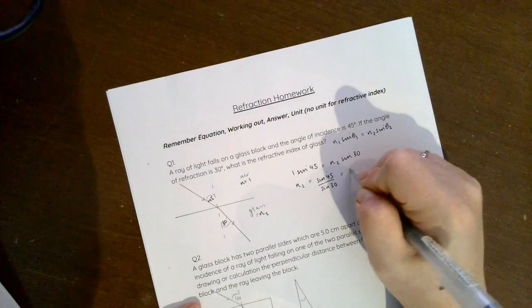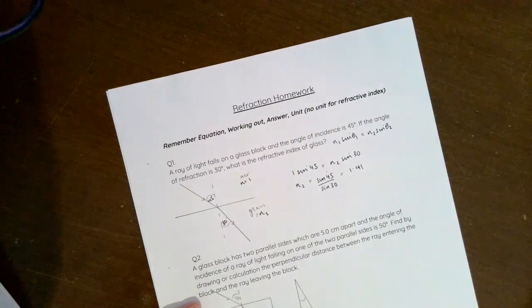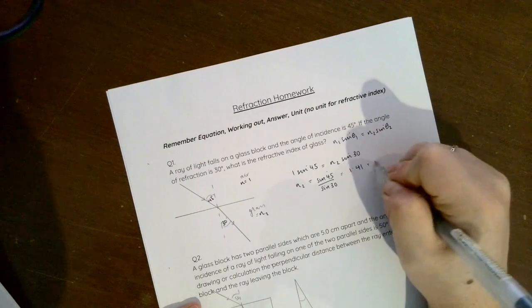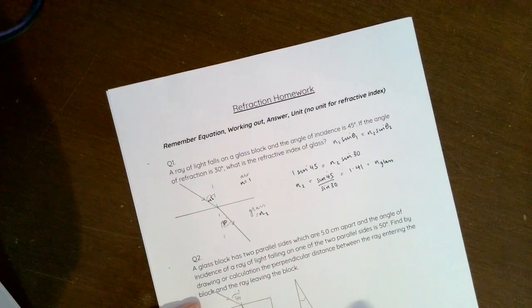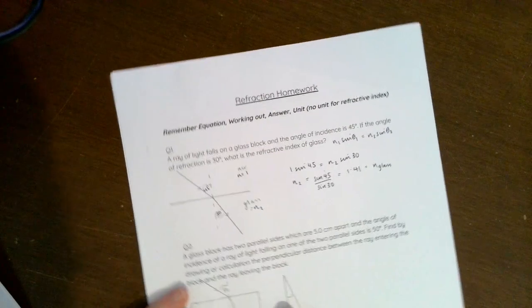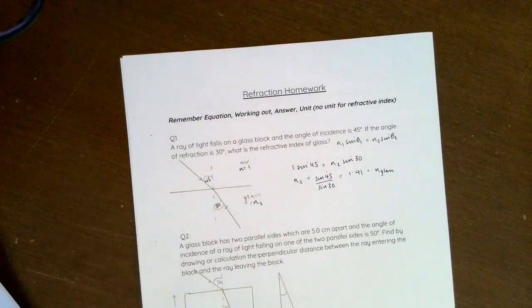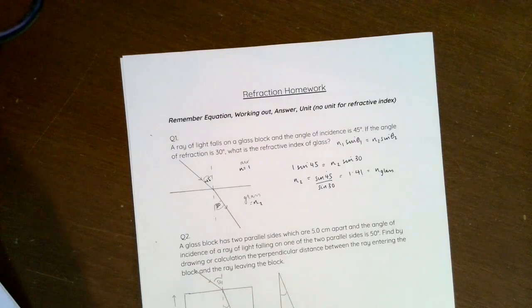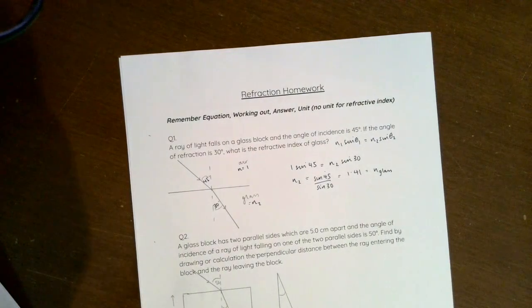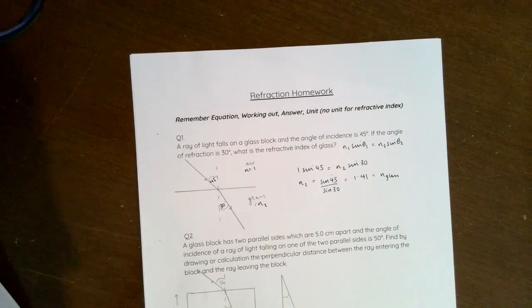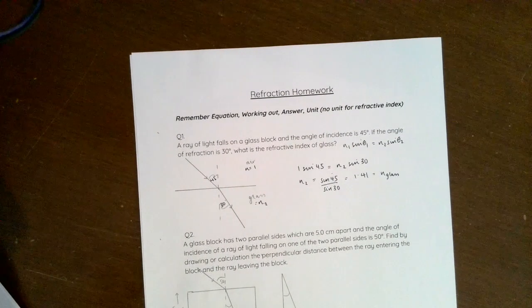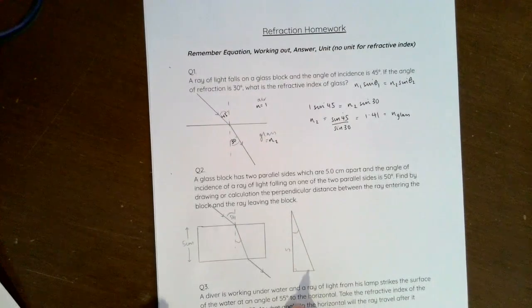If I rearrange that I can say n₂ is equal to sin 45 divided by sin 30, and that on the calculator is 1.41. So that's n of glass for this particular worksheet. Obviously in the lesson before we actually said that it was about 1.5, it depends on the glass, but you will be given the values that you need to calculate it in any questions. So that's the first question, fairly straightforward.